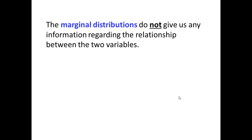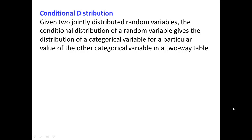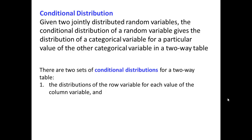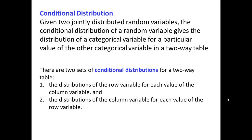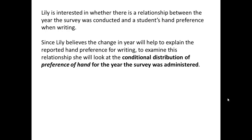The marginal distributions do not give us any information regarding the relationship between the two variables. For that, we need to look at conditional distributions. Given two jointly distributed random variables, the conditional distribution of a random variable gives the distribution of a categorical variable for a particular value of the other categorical variable in a two-way table. There are two sets of conditional distributions for a two-way table: the distributions of the row variable for each value of the column variable, and vice versa. Lily is interested in the conditional distribution of preference of hand for the year the survey was administered.